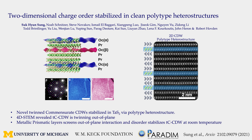In summary, we've synthesized a polytype heterostructure that stabilizes twinned commensurate CDWs. We employed 4D STEM to reveal that the twinning is occurring out-of-plane. Metallic prismatic layers screen out-of-plane interaction and disorder to stabilize twin commensurate CDWs at room temperature. We would like to thank the WNCAC Foundation and Paradigm for support. Thank you for watching.